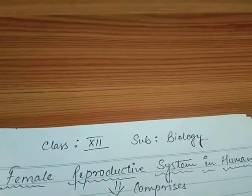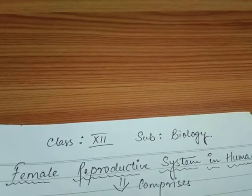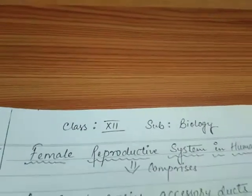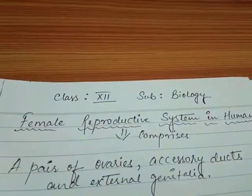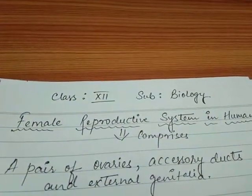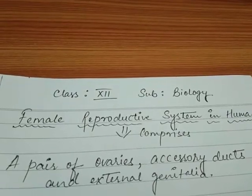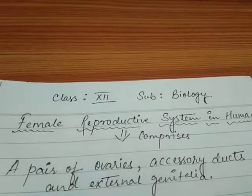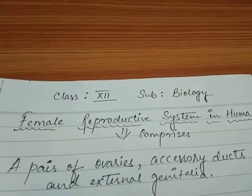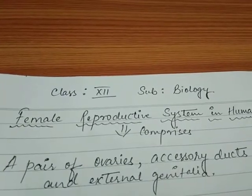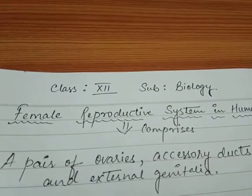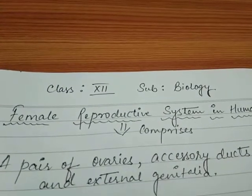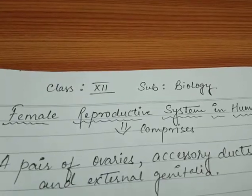The female reproductive system in human mainly comprises of a pair of ovaries, accessory ducts, and external genitalia. In today's class, we are going to study about all these parts of the reproductive system in female in detail.